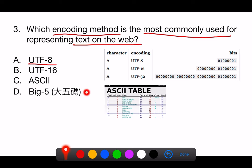D. Big 5 is a 2-byte encoding system used primarily for traditional Chinese characters. While it's important in regions using traditional Chinese, it isn't suited to the global and multilingual needs of the web.